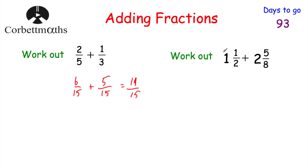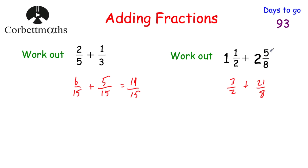Now let's look at adding mixed numbers. We've got: work out one and a half plus two and five eighths. The first thing I'd do is convert both mixed numbers to improper fractions. One and a half: 1 times 2 is 2, plus 1 is 3, so that's three halves. Two and five eighths: 2 times 8 is 16, plus 5 is 21, so that's 21 eighths.